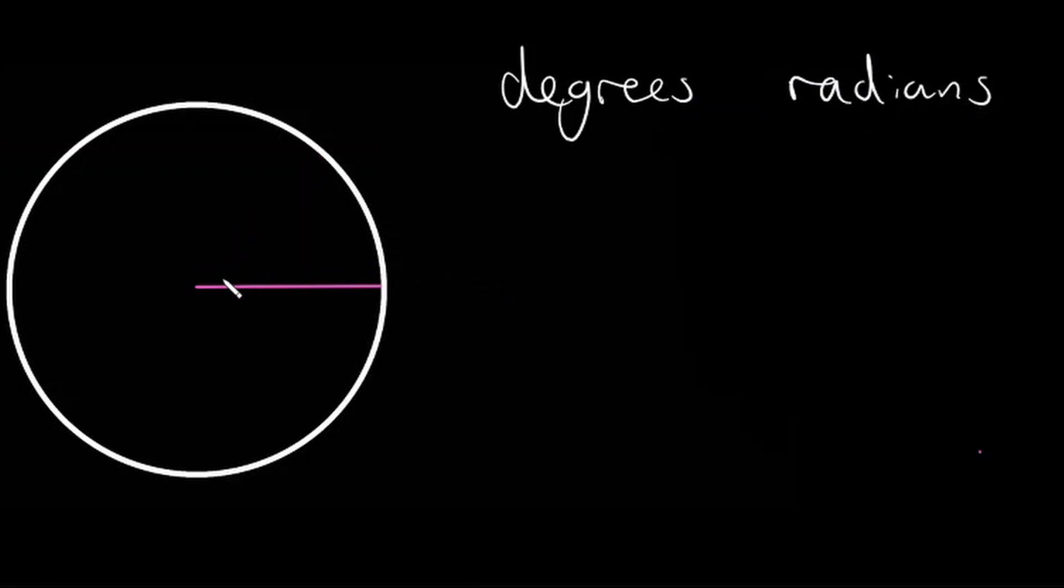So a radian is defined as the angle at the center of a circle whose arc is equal in length to the radius. So what does that actually mean?